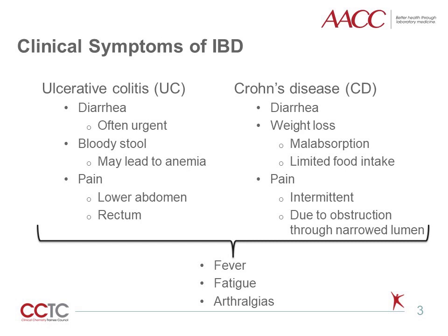Patients with ulcerative colitis and Crohn's disease present with similar clinical symptoms. Both diseases lead to chronic diarrhea as one of the primary symptoms, although with ulcerative colitis this diarrhea is generally very urgent in nature. Patients with ulcerative colitis tend to have more blood in their stools, which can lead to fairly significant anemia. In Crohn's disease, weight loss is more of a significant symptom, due partly to malabsorption but also to limited food intake.